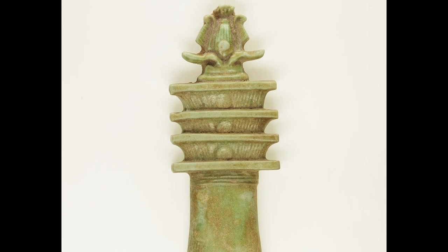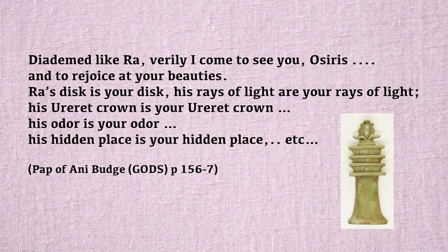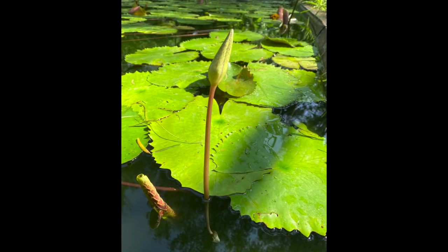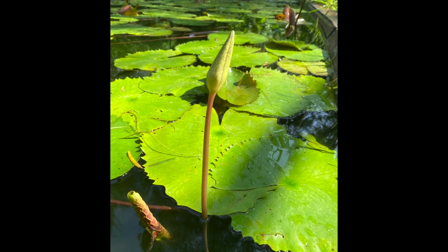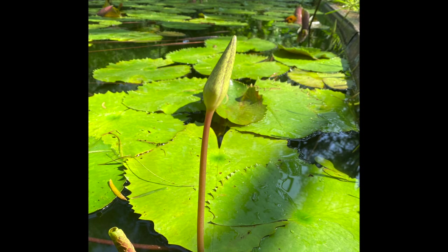To quote the Papyrus of Ani: 'Diadem like Ra, verily I come to see you, Osiris, and to rejoice at your beauties. Ra's disc is your disc. His rays of light are your rays of light. His ureret crown is your ureret crown. His odor is your odor. His hidden place is your hidden place,' etc. So Osiris is Ra — but Ra as a hidden sun in the aquatic underworld, with, apparently, a very agreeable odor.